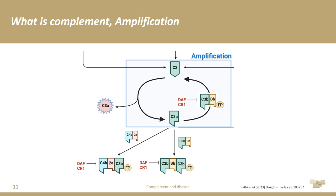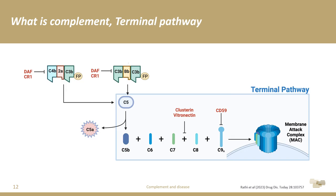As the concentration of C3B molecules increases on a surface, it eventually starts to associate with already-established C3 convertases, so you end up with two C3B molecules for every convertase. At this point, the specificity of the convertase changes slightly and it can now cleave another protein called complement C5. These C5 convertases cleave C5 into C5B and C5A. C5A is the second anaphylatoxin, which does the same as C3A. C5B is the start of the formation of the membrane attack complex — or MAC — which forms pores embedded within the phospholipid bilayers of cells, creating cell lysis.